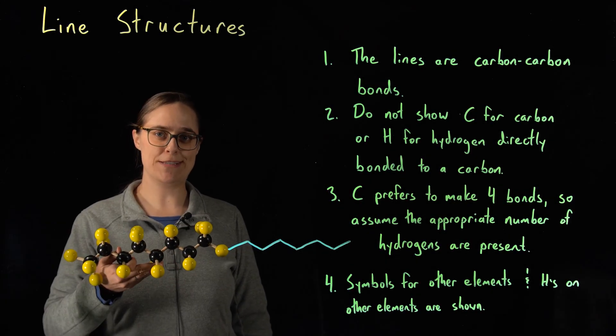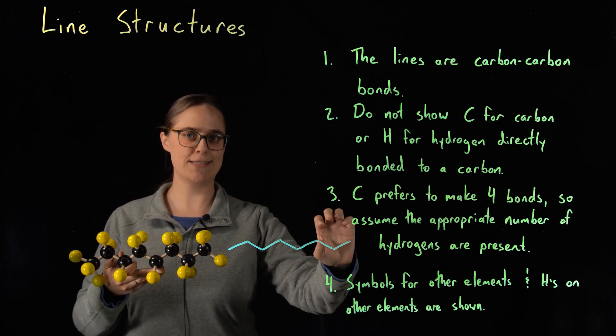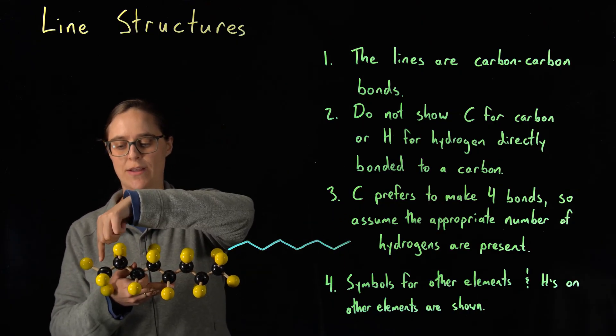Let's go over the rules for drawing line structures. So this is a molecular model of octane. This is its line structure. Octane has eight carbons in a chain.